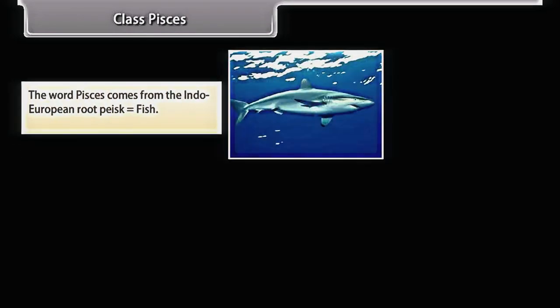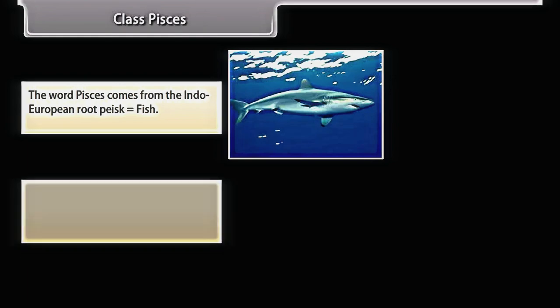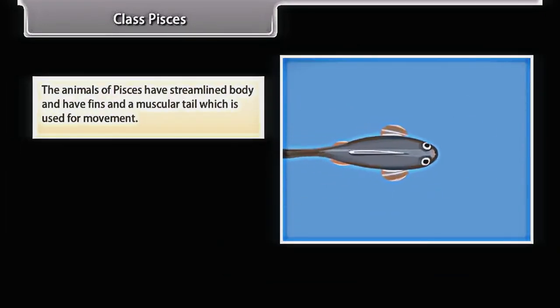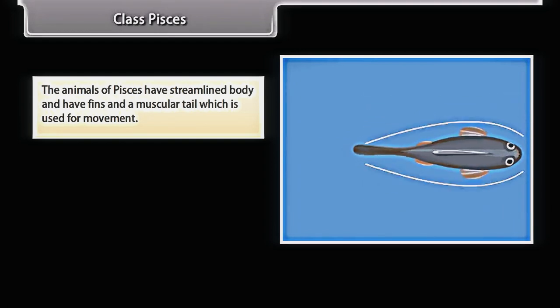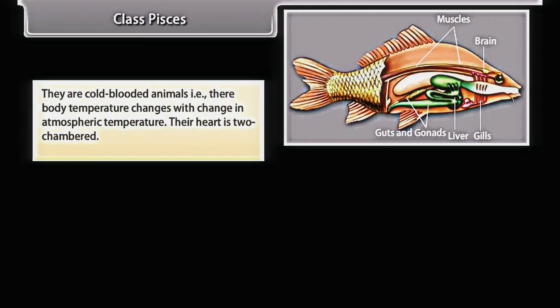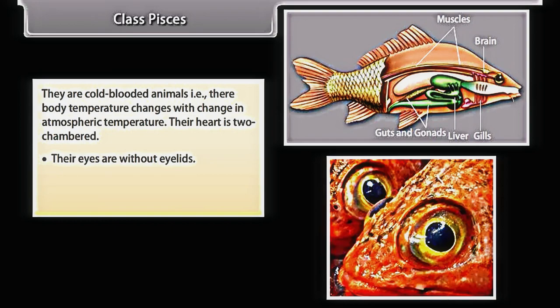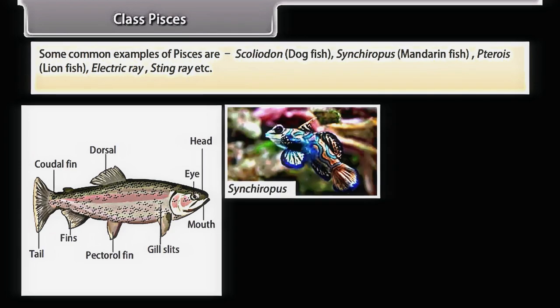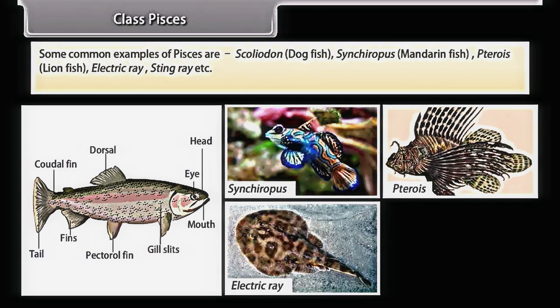The word Pisces comes from the Indo-European root 'pesk', meaning fish. They are exclusively aquatic animals that obtain oxygen dissolved in water using gills. They have a streamlined body with fins and a muscular tail for movement. They have a cartilaginous or bony skeleton, and skin covered with scales or plates. They are cold-blooded — body temperature changes with atmospheric temperature. Their heart is two-chambered; eyes are without eyelids; they have nostrils and lay eggs. Common examples are Scoliodon (dogfish), mandarin fish, lionfish, electric ray, and stingray.